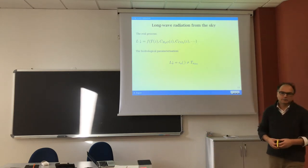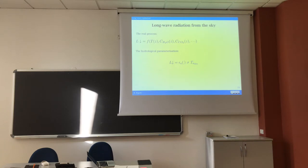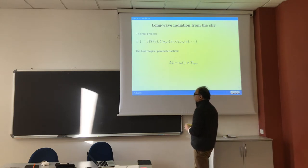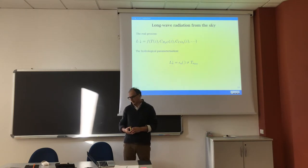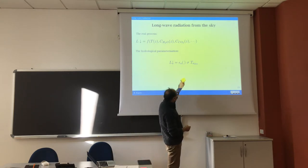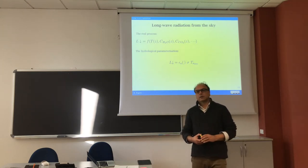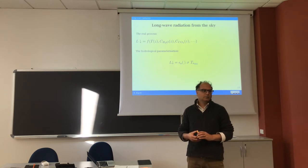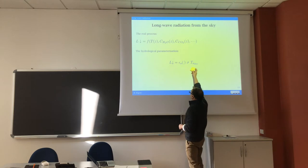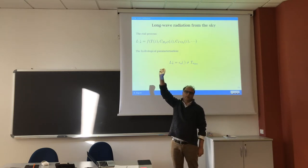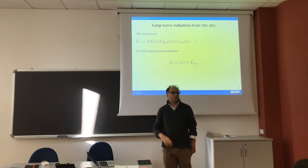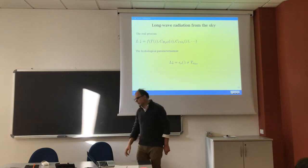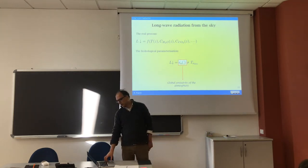The actual longwave process from the atmosphere is a complicated function of temperature at different levels, water vapor content, CO2 content, and methane content. The empirical parametrization we use resembles the Stefan-Boltzmann law, where we take temperature measured at two meters from a meteorological station near the surface and make the emissivity a function of several other variables. This is called the global emissivity of the atmosphere.